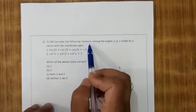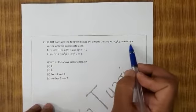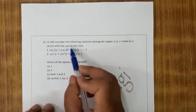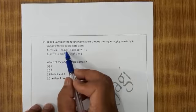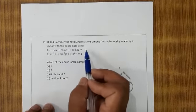Question number 104. Consider the following relations among the angles alpha, beta, gamma made by the vectors with the coordinate axis. Cos 2 alpha plus cos 2 beta plus cos 2 gamma is minus 1.